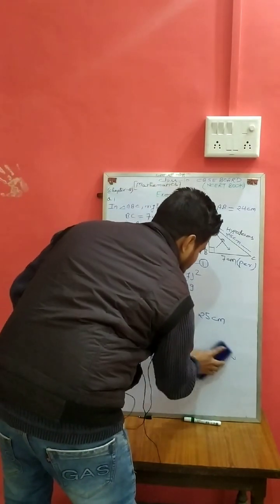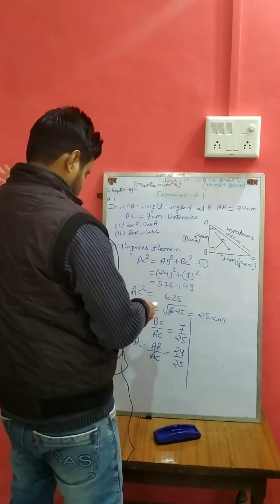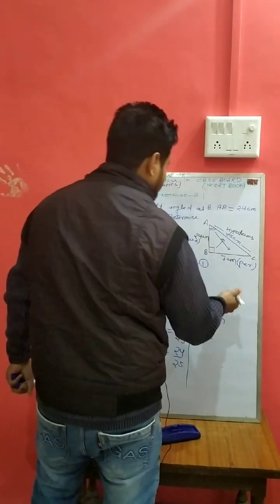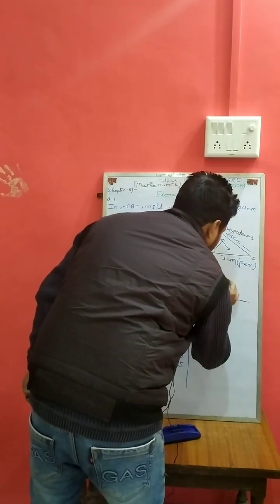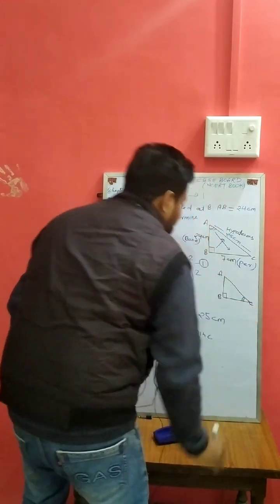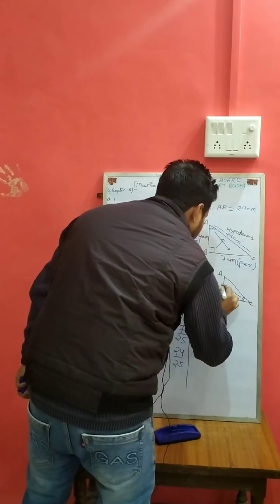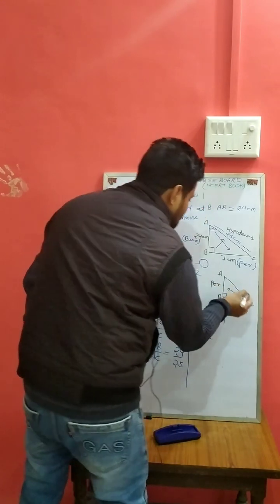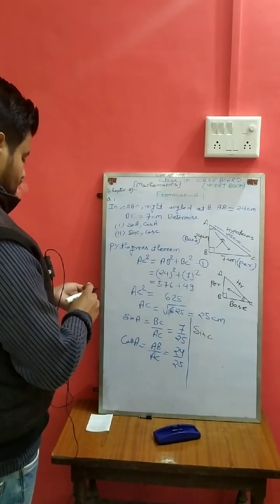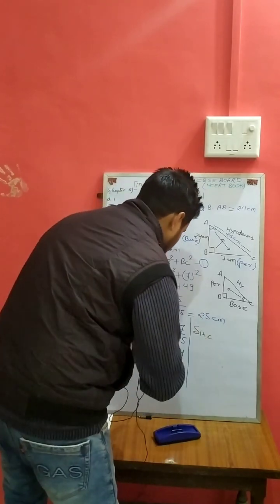And now we will talk about sin C and cos C. When we talk about sin C, then we will look at this figure. When we talk about angle C, right angle at B. Then in this case, this is perpendicular. And hypotenuse is fixed. And this one is base. So ratio according to perpendicular on base changes depending on the angle.